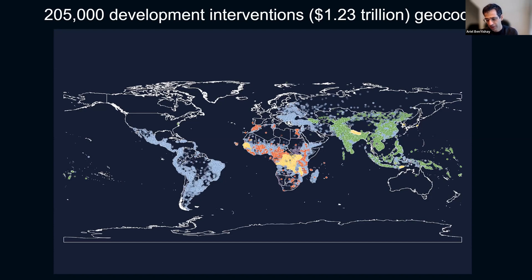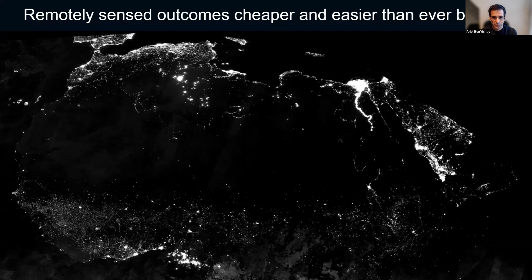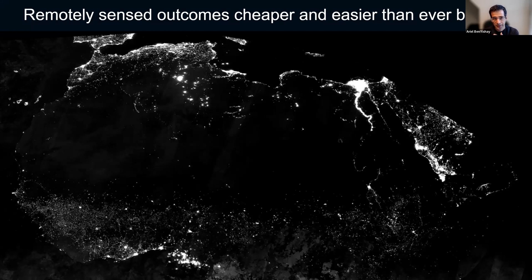All of these geo-referenced activities we collected and compiled made us think about what more we could do with them — why certain areas are getting aid and others are not. Naturally, we linked that together with newly available geo-referenced outcome data on poverty, living conditions, the natural environment, and agricultural outcomes. One of the most immediate things we linked it with was nighttime lights and other remotely sensed outcomes, partly because these outcomes are now much more widely available, more accessible, and cheaper to access.